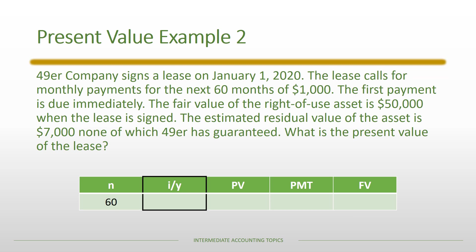In this case N is 60 because there are 60 monthly payments. From the lessor's perspective, they're giving up the asset worth $50,000, receiving payments of $1,000, and they assume the asset will be worth $7,000 when returned at the end of the lease. Therefore the I/Y, or the implicit rate in the lease, is 0.95% — that is a monthly discount rate.